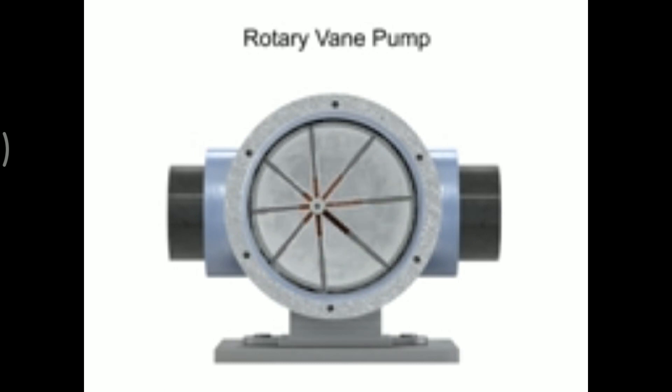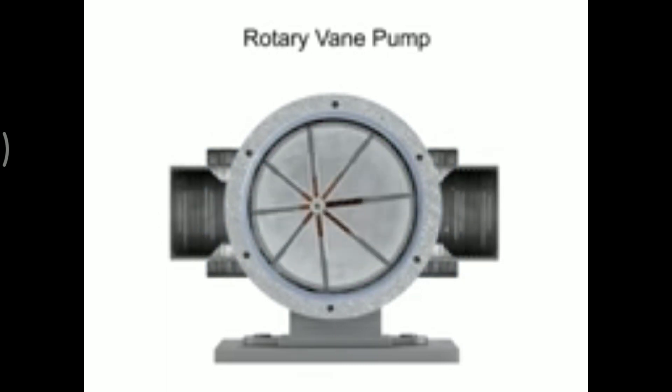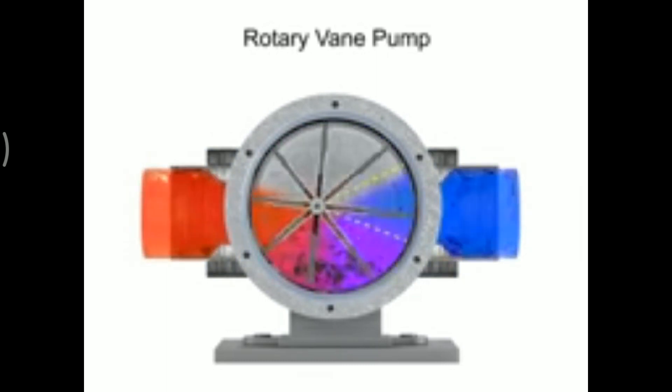As the vanes rotate, they create chambers of varying sizes within the pump. Fluid enters at the largest chamber. As the vanes rotate and retract, the chambers get smaller, forcing fluid to exit through the discharge port.